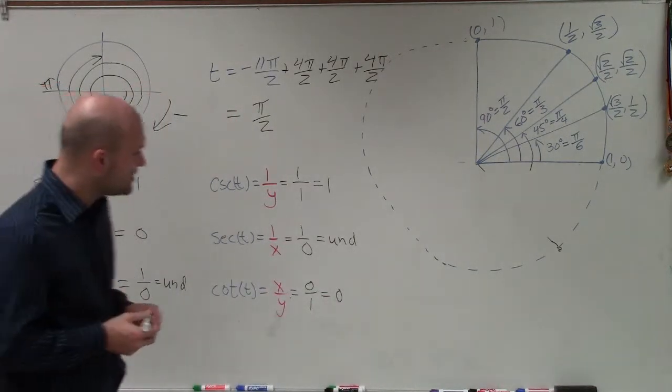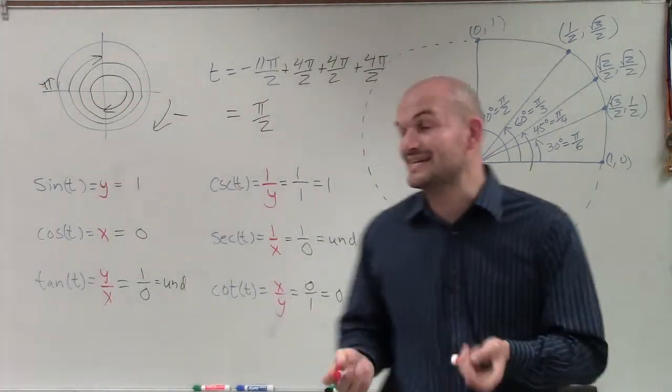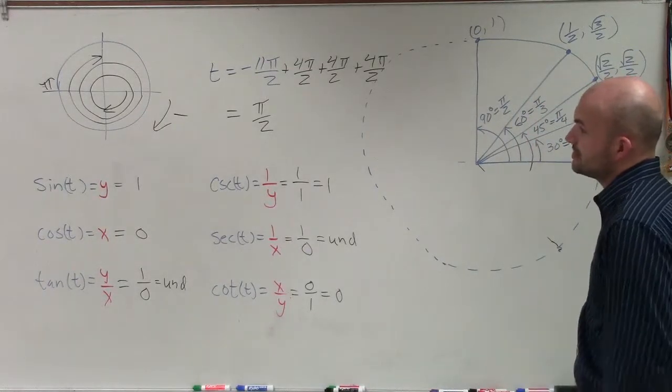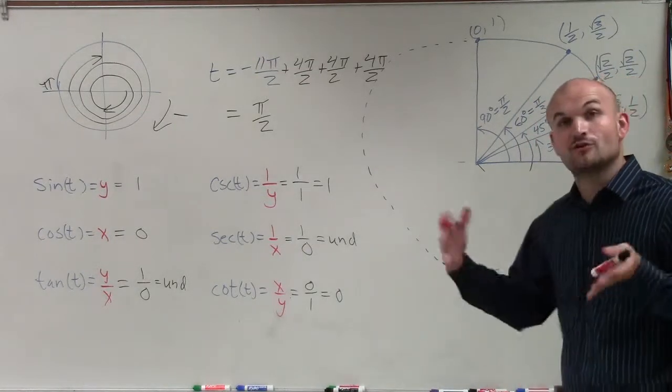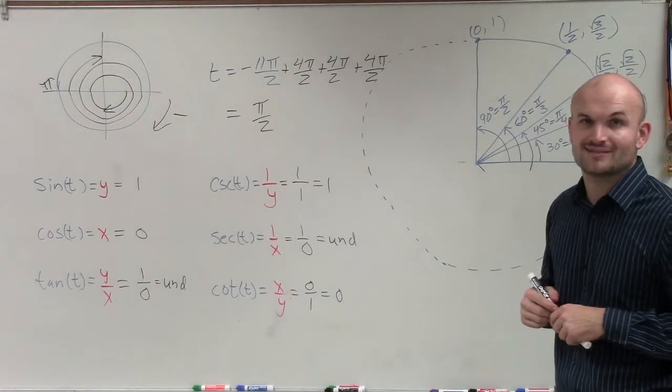So there we go. That is how you evaluate your six trigonometric functions when you have an angle, either by graphing it or by using coterminal angles. Thanks.